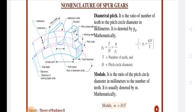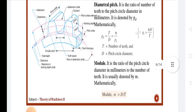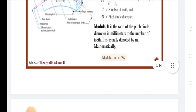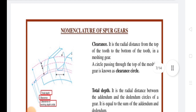Next is Pressure Angle. It is the angle between the common normal drawn at the point of contact of the mating gears and the common tangent at the pitch point. It is also called the angle of obliquity and is denoted by φ. The standard values of pressure angles are 14.5 degrees and 20 degrees.